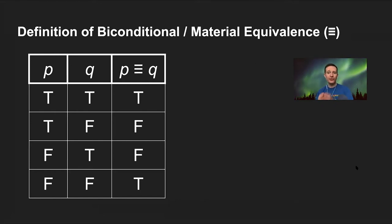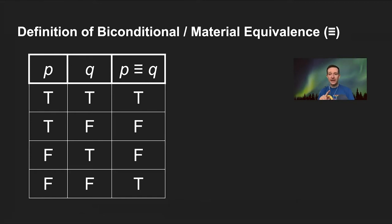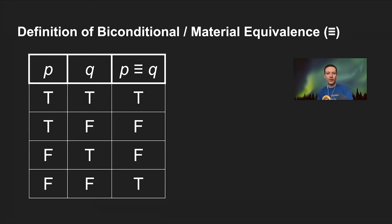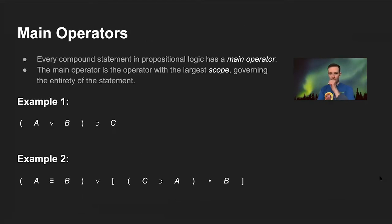Those are the truth tables that define these five operators. All of propositional logic that we'll look at for the next several weeks depends on these five operators and their truth table definitions. Please spend plenty of time with these truth tables, commit them to memory, and do the exercises to build an intuitive sense of their meaning.